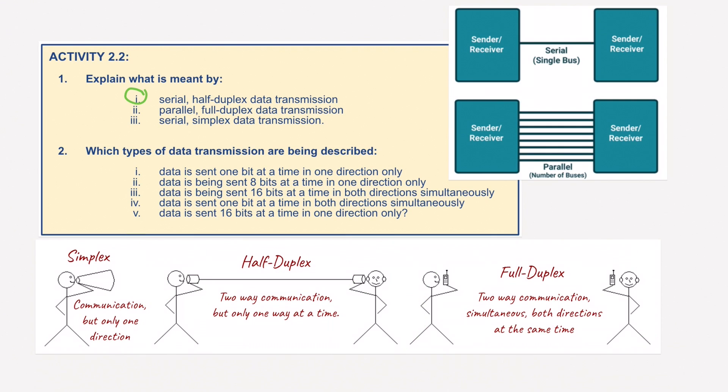So to answer the questions, serial half-duplex would basically mean serial, being this one, and half-duplex would mean one single wire using one single bus going in one direction, and half-duplex would basically mean it could travel in both directions, but not at the same time.